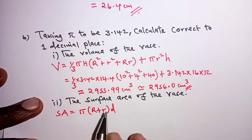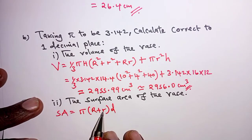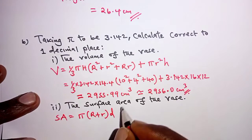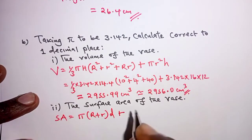where r is the radius of the upper part, and this is the radius of the lower part, d is the slant height of the frustum,